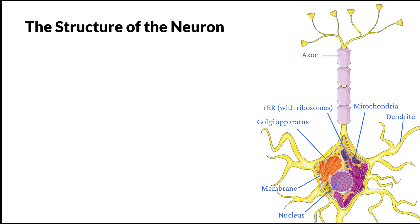Now let's look at the structure of the neuron. The neuron has a soma, also called the cell body or the pericaryon. Soma means body in Latin, while pericaryon is Greek — peri means around, and caryon means nucleus — so pericaryon basically means the part surrounding the nucleus. Inside the soma there is the nucleus, which contains the hereditary information of the neuron, the DNA, and controls all the functions of the cell through gene expression.